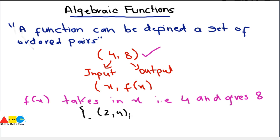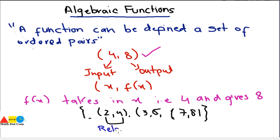We have also seen functions in the form of multiple ordered pairs like (2,4), (3,5), (7,8). These ordered pairs mean that 2 is related to 4, 3 is related to 5, and 7 is related to 8. A function must have a specific property that relates its input to the output, giving a set of ordered pairs on certain values of x.